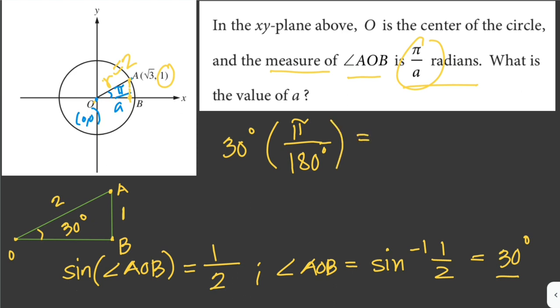So this is just 30π over 180, and 180 is divisible by 30, so that is 6. So this is just equivalent to π over 6.